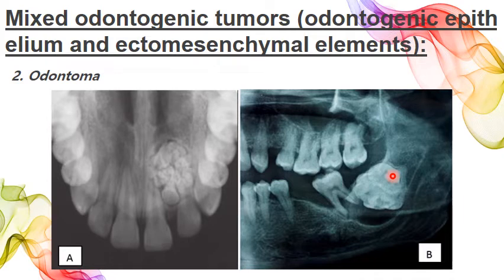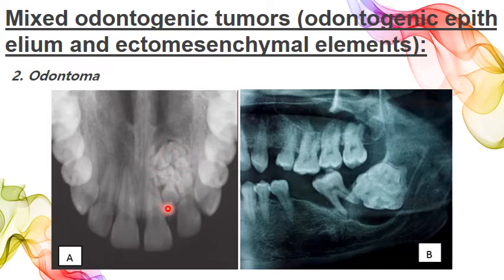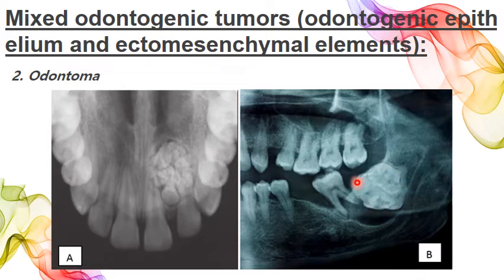They can occur at any age, typically diagnosed in the second decade, more often in females. Clinically they are usually asymptomatic but may show signs including association with unerupted or impacted teeth, retained deciduous teeth, swelling, displacement of teeth, and malocclusion. Radiographically, compound odontoma appears as well-organized malformed tooth-like structures surrounded by a narrow radiolucent zone, while complex odontoma appears as an irregular mass of calcified material surrounded by a narrow radiolucent band. Treatment is simple enucleation and curettage with no recurrence reported.